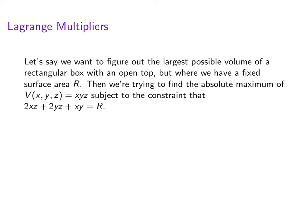What we're trying to do is find the absolute maximum of some function V(x,y,z) = xyz. That's the volume. But there's a constraint. The constraint is that the surface area of the box is equal to R. So here we're using x and y for length and width and z is going to be the height.